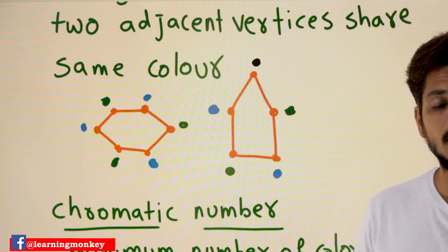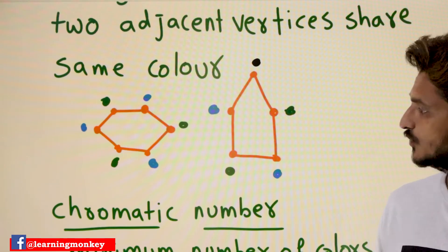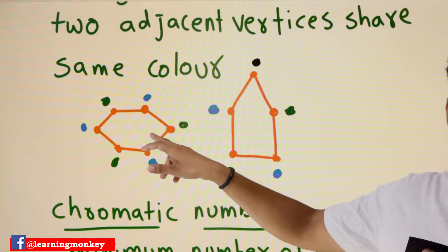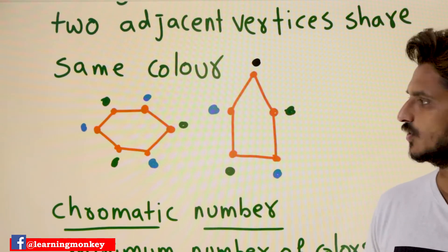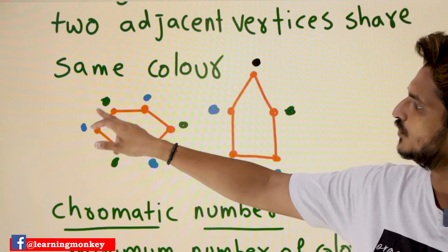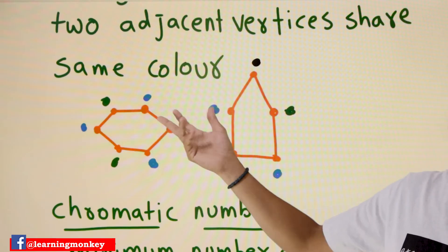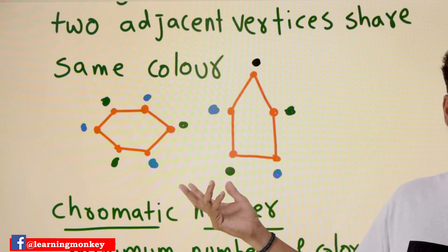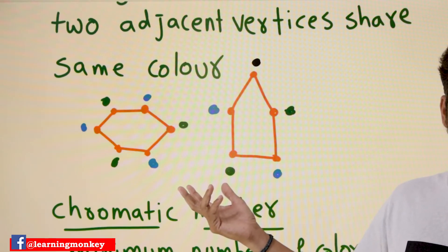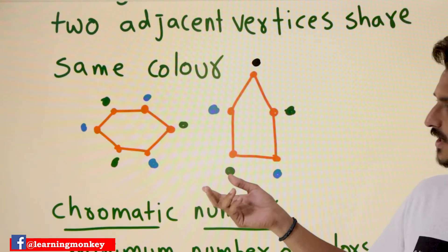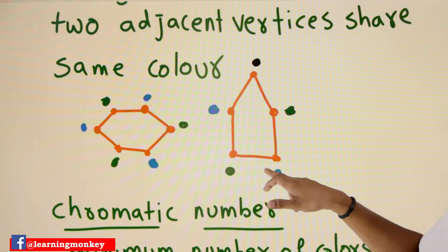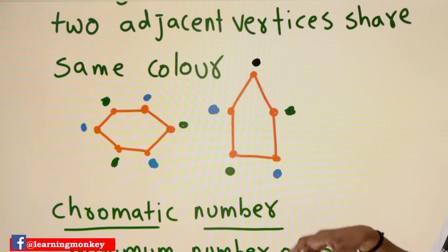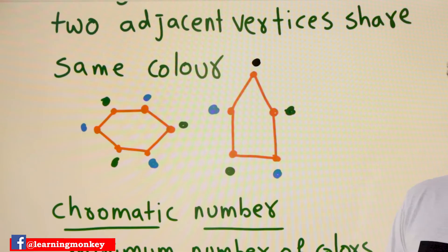So we have colored this graph. The minimum number of colors needed to color this graph is two. You could take three — blue, green, red — but two is the minimum. Now let's take the next example.